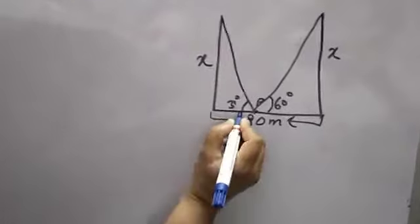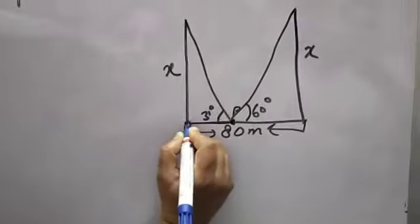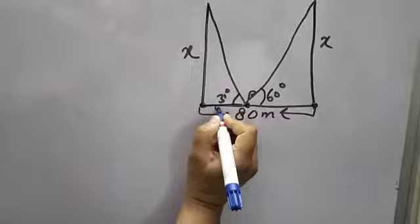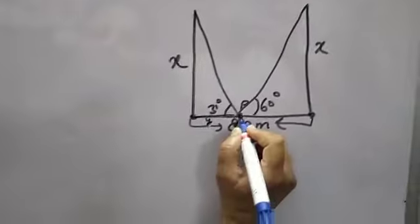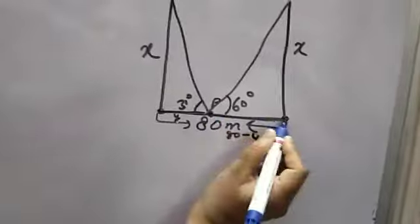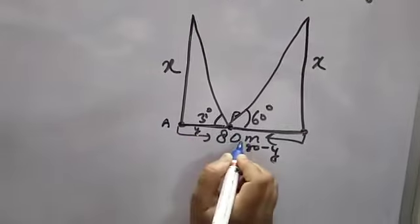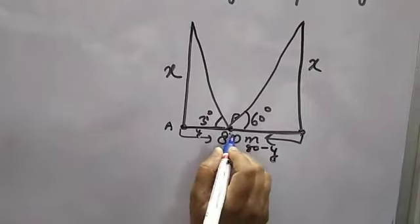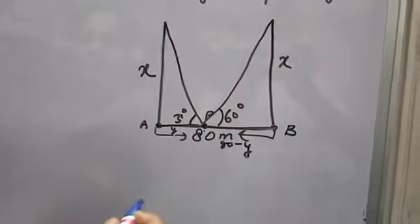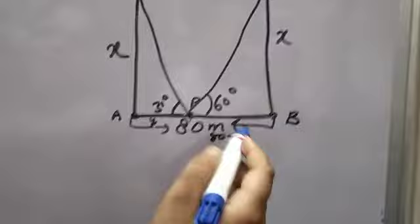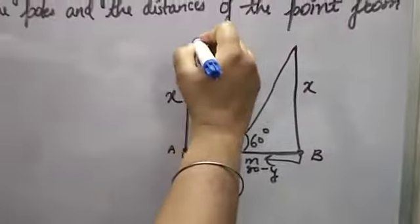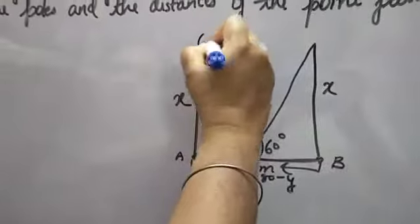Suppose this is one point, this is one pole, this is pole two. Suppose this distance, let's take it as y. It's going to be 80 minus y. Suppose point A, point P, and point B. Now you can find AP, PB, and X. Suppose point C, this is D.